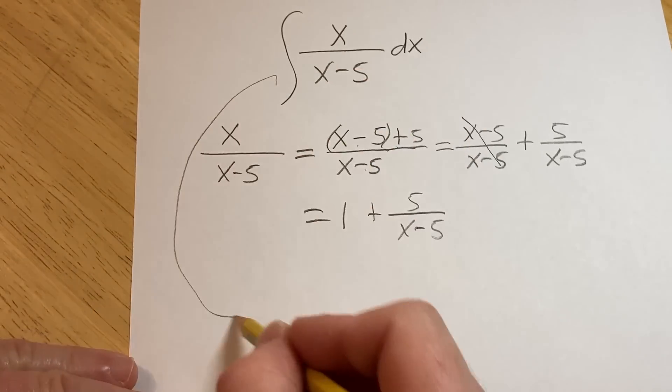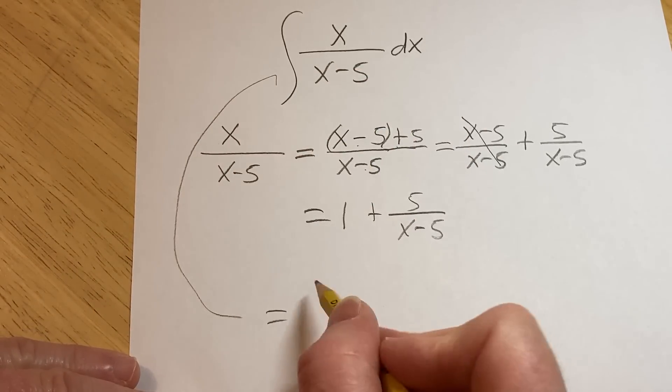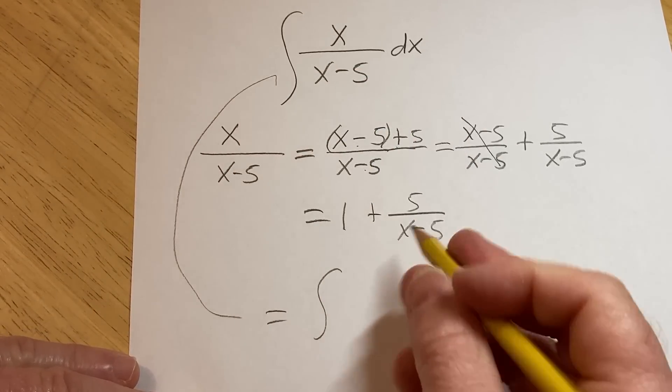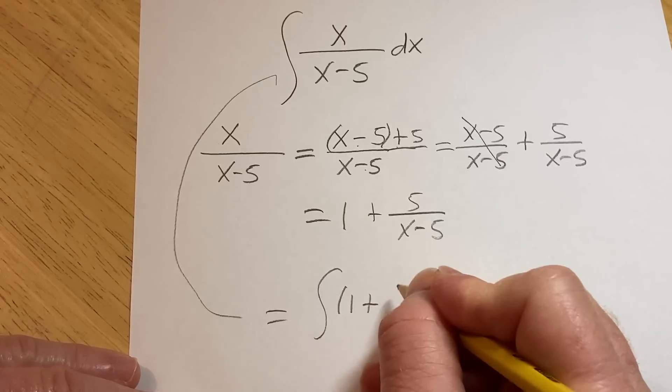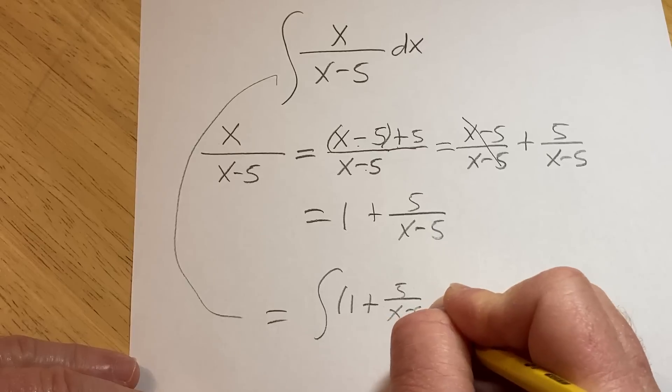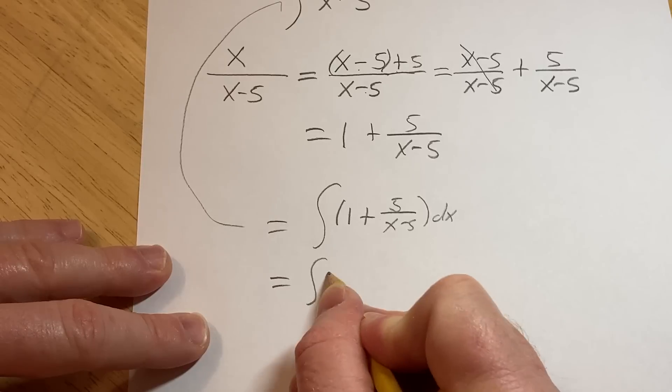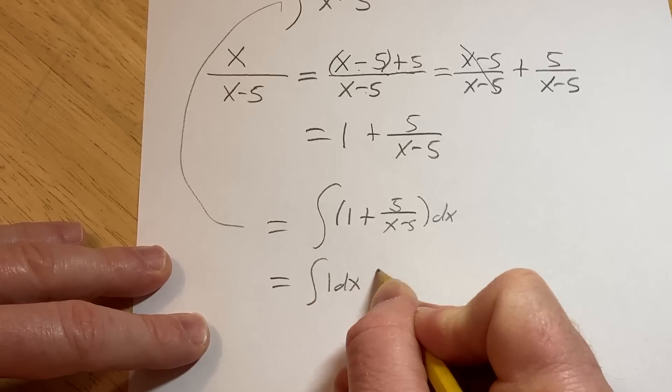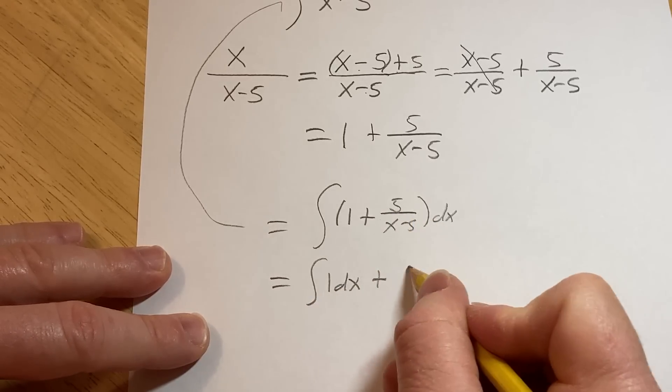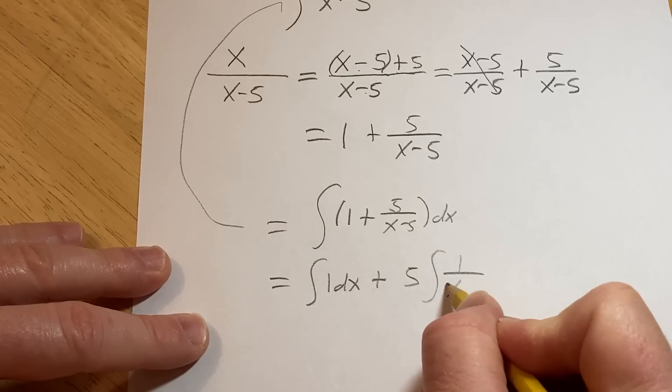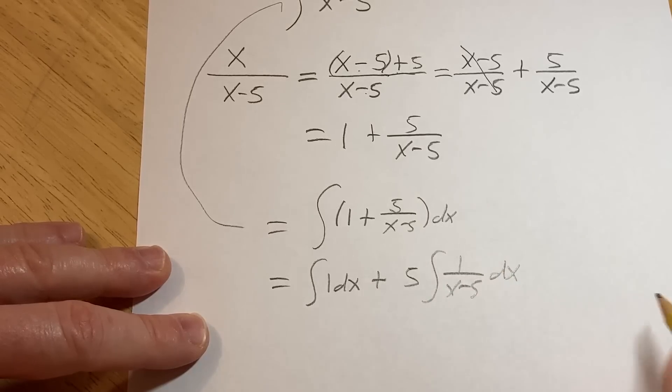So our original integral is equal to two integrals. It will be the integral of 1 plus 5 over x minus 5 dx. And now you can break this up into two pieces. This is the integral of 1 with respect to x plus, we can pull out the 5 here, 1 over x minus 5 with respect to x.